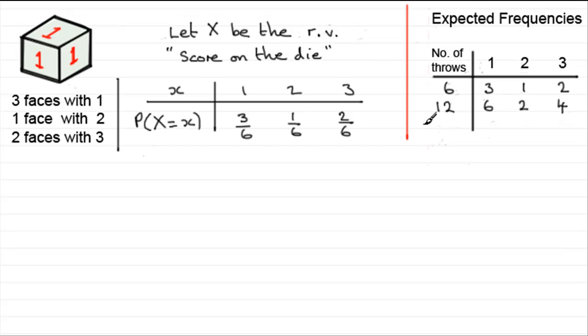And suppose I threw this die lots more times. Let's say 600. I've chosen 600 because, nice number, because 6 goes into it. 3 in every 6 gives a 1. So in 600 throws, it's going to be 300. 300, we would expect to result in a 1. For getting a 2, I would expect it to be 100. And for getting a 3, I would expect it to be 200.